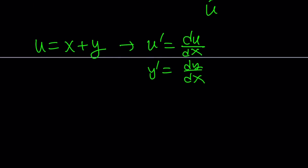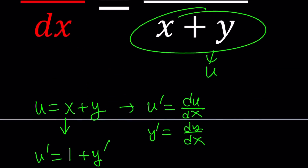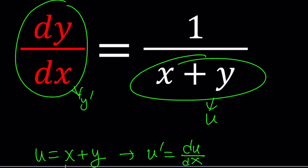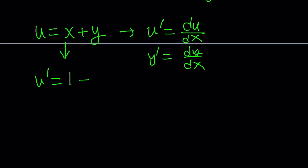Now let's go ahead and differentiate both sides of this expression, because when you substitute you have to substitute everything — you can't have different variables at the same time. If you differentiate this, the derivative of u is u prime, the derivative of x is 1, and the derivative of y is y prime. Looking at our original expression, we have dy over dx which is y prime, so I need to be able to replace y prime with something, since I was able to replace x plus y with u. What am I going to replace y prime with?